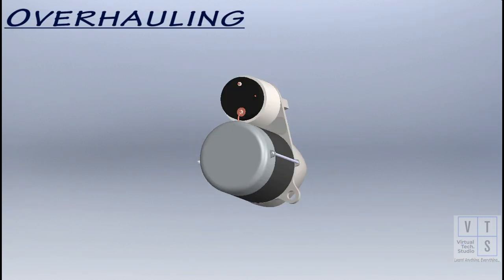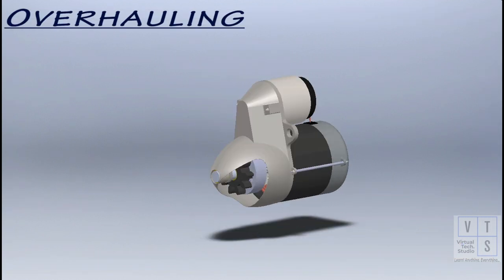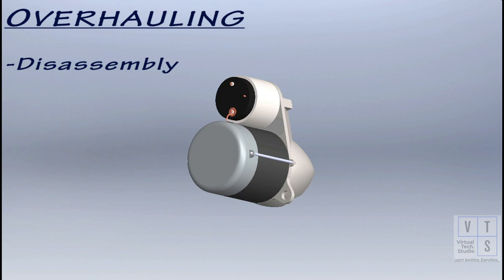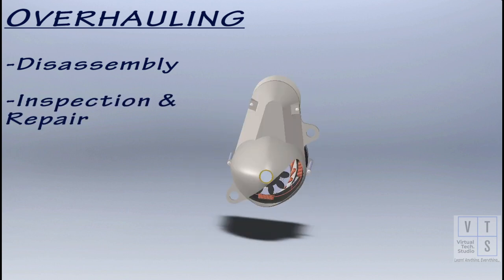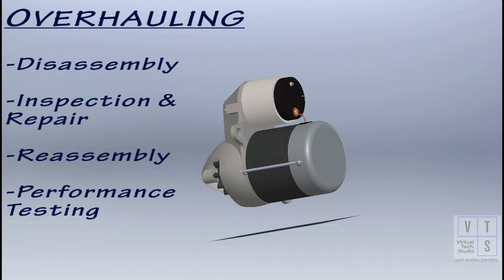In this animated presentation we will look at how to overhaul a typical automobile starting motor. We will go through disassembly, inspection, repair and or replace the parts, reassembly, and finally performance testing.